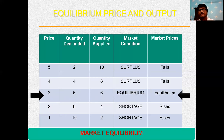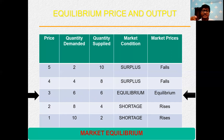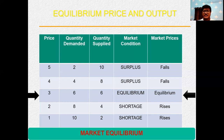During surplus, price will reduce. During shortage, price will increase. If there is excess supply, price will fall. If there is excess demand, price will rise. The other name for surplus is excess supply, and the other name for shortage is excess demand.